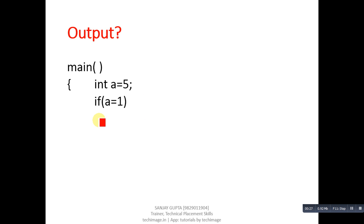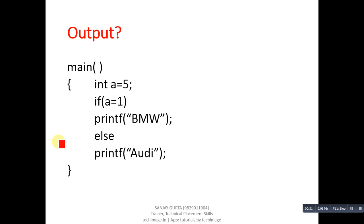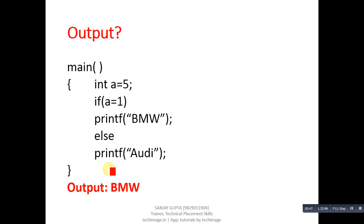Coming on to skill-based questions, you have to identify the output of these questions. These questions can be asked in your interviews. The first code segment is: int a equals to 5, then if a equals to 1, then printf, else again printf. You have to identify the output of this question. The output will be BMW.